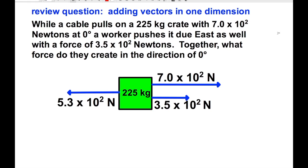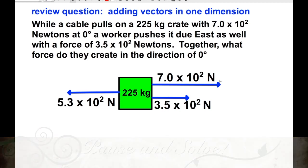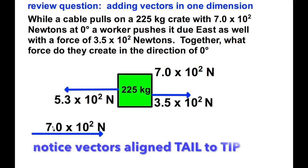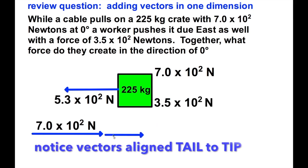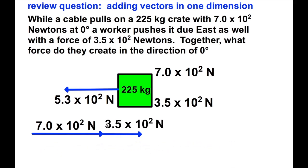Here's a nice review question to tie it all together. While the cable pulls on a 225 kilogram crate with 7.0 times 10 to the 2 Newtons at zero degrees direction, a worker pushes it due east as well with a force of 3.5 times 10 to the second Newtons. Together, what force do they create in the direction of zero degrees? Does anyone realize that the 5.3 times 10 to the 2 Newtons must be force due to friction, I wonder? Did you try to add the two vectors that were going in the same direction first? The 700 Newtons and the 350 Newtons? That would have been an easy approach to take.